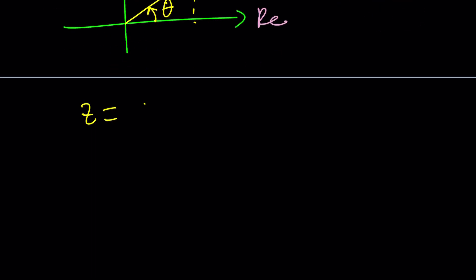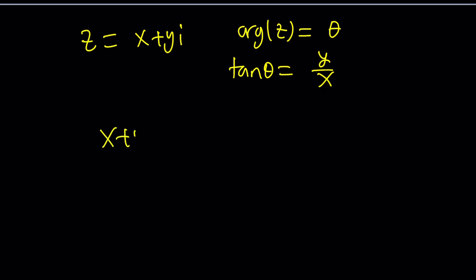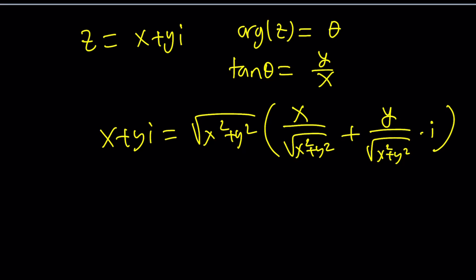If you have z equals x plus yi, the argument of z is θ, and we know that tan θ is equal to y over x. Because a complex number can be written as the absolute value times x over the absolute value plus y over the absolute value. Because when you distribute, you're going to get x plus yi.